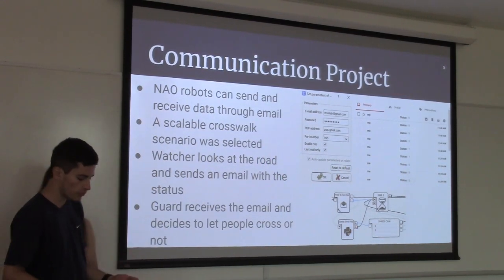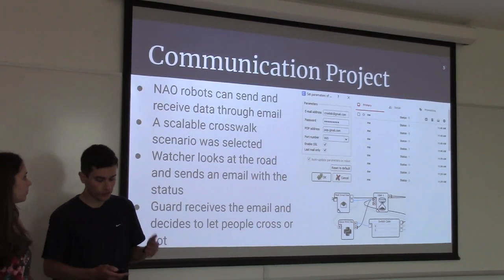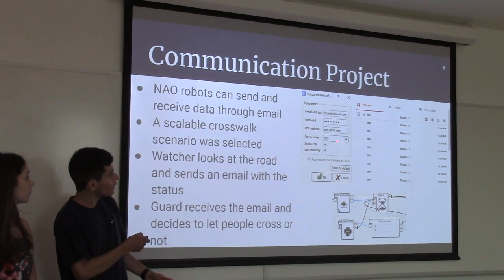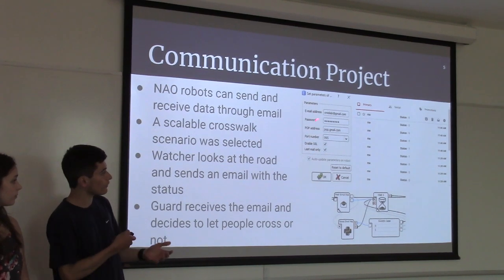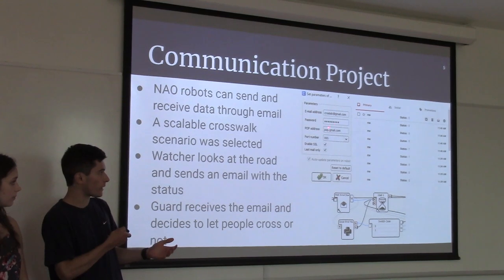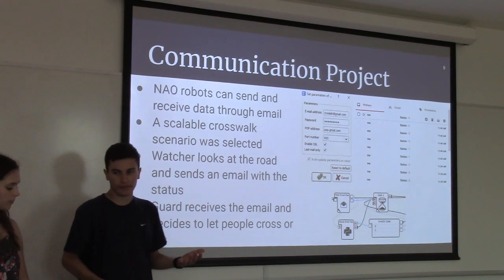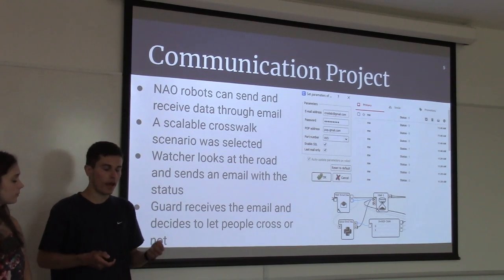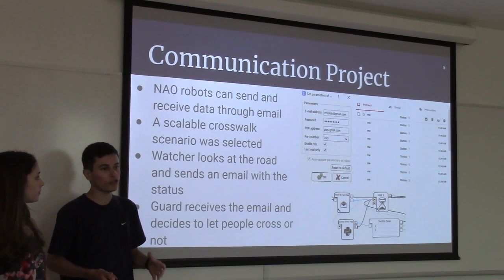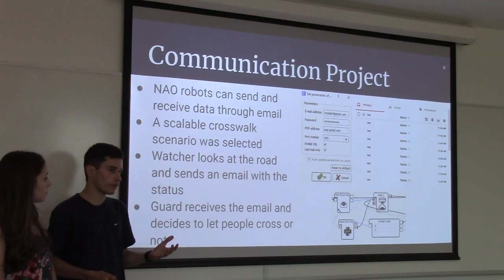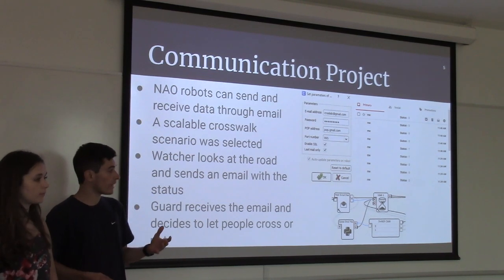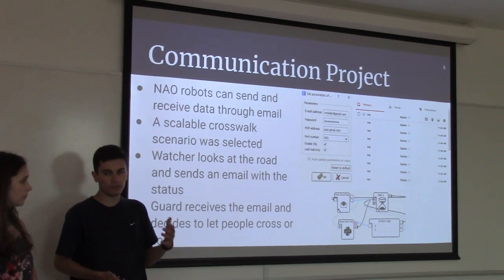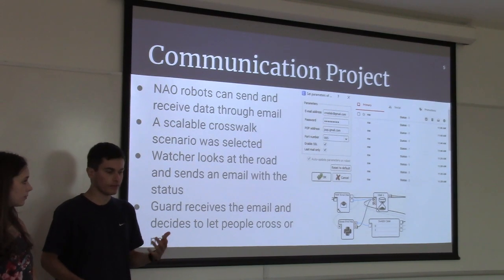For my part of this project, it has to do with communication between two robots. The NAO robots are capable of sending and receiving data through email. An example of the parameters for receiving emails is shown here, including the email address, the password, and a few other aspects. I wanted to find out how viable this was as a means of transferring data from robot to robot, so I selected a crosswalk scenario that is very scalable in order to make it more complex in the future.